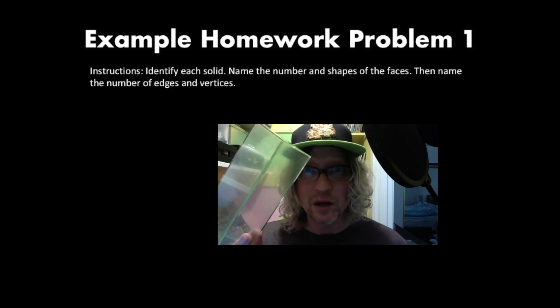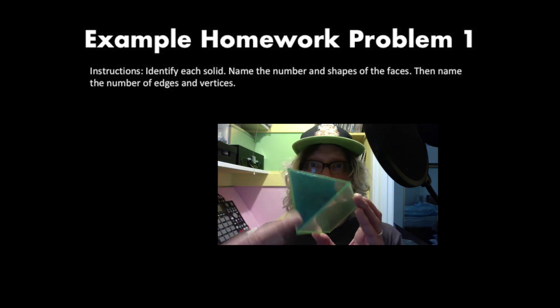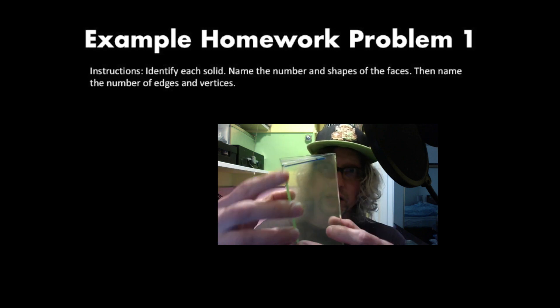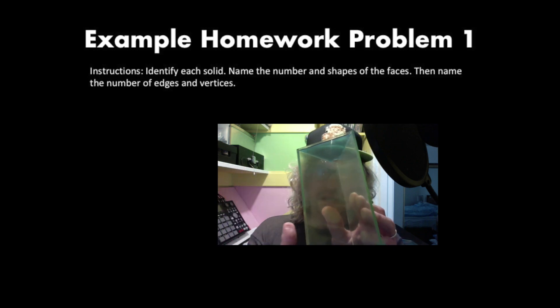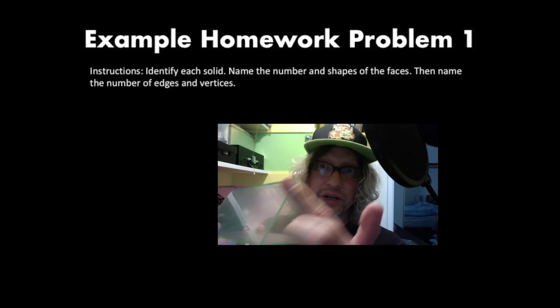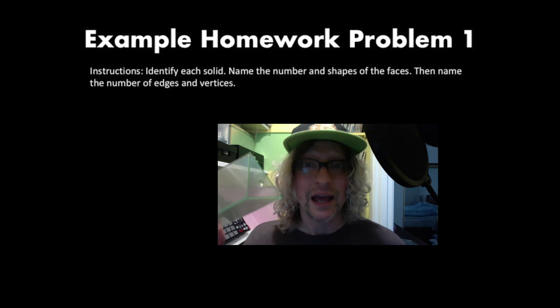Finally, name the number of edges and vertices. I count the edges. I got one, two, three up on that triangle. And then I count the three going down, connecting the two triangles together. That makes six. And then I have three edges on this triangle here. So that gives me nine edges.